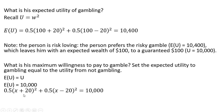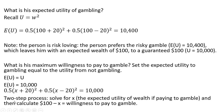Our goal here is to solve for x. This is going to be a two-step process. We first solve for x, which represents the expected utility of wealth if paying to gamble, and then calculate $100 minus x. That $100 minus x — where $100 is our wealth from not gambling minus x — will be the willingness to pay to gamble.